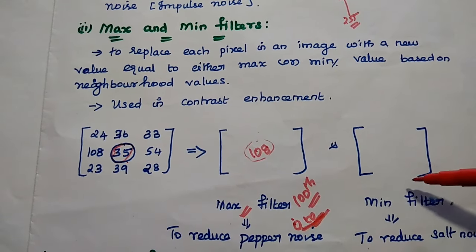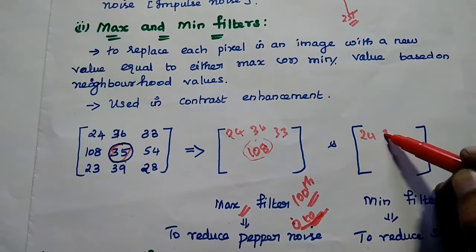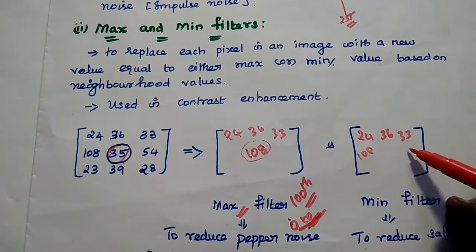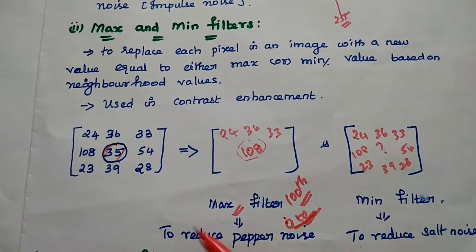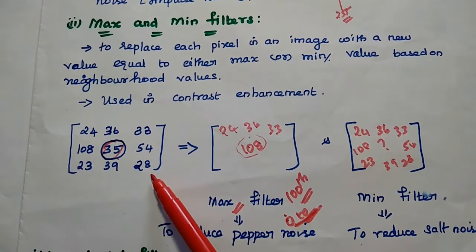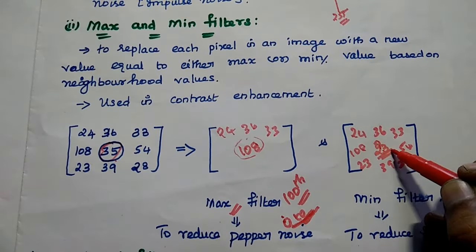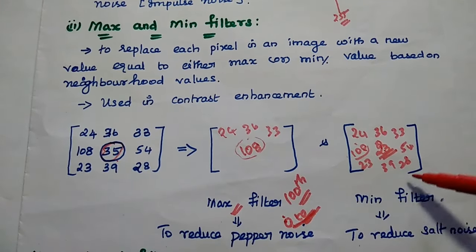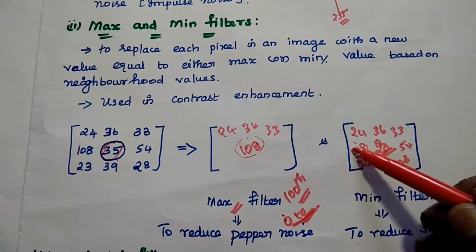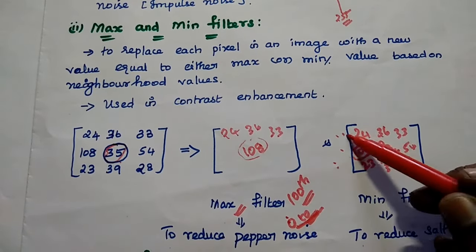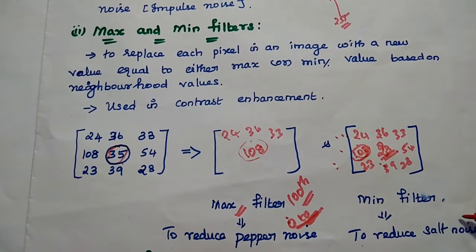For the minimum filter, we consider the lowest value in the neighborhood. In the same image segment with values like 24, 36, 33, 108, 54, 23, 39, 28, the minimum value is 23. So the central pixel is replaced with 23. As we slide the filter across the image, each pixel gets replaced with the minimum value of its neighborhood segment. This means the minimum filter reduces the salt noise.